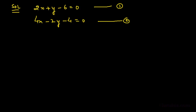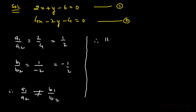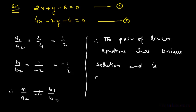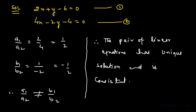Now we shall find a1/a2, which equals 2/4 = 1/2. Then b1/b2 equals −1/−2 = 1/2. Therefore a1/a2 equals b1/b2... wait, since a1/a2 is not equal to b1/b2, the pair of linear equations has a unique solution and is consistent. Now we shall solve these two equations using the graphical method.